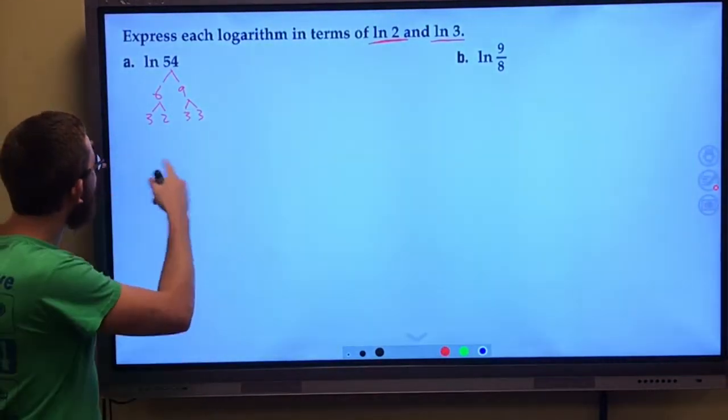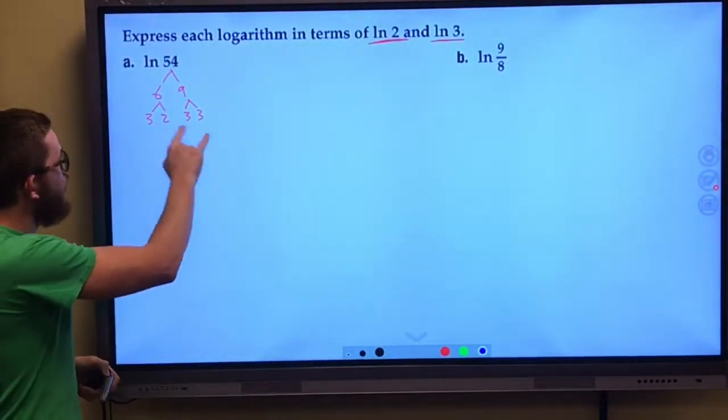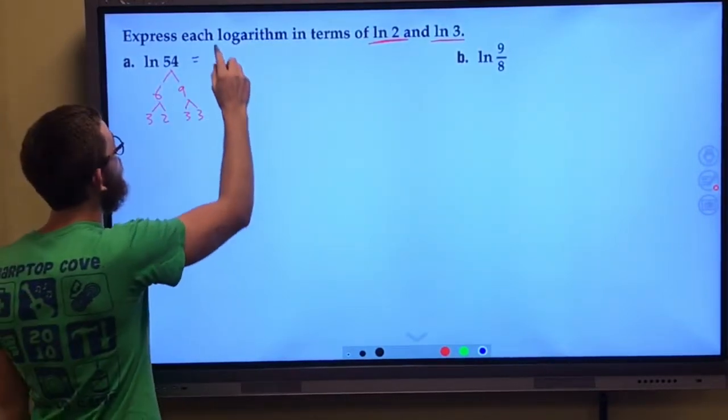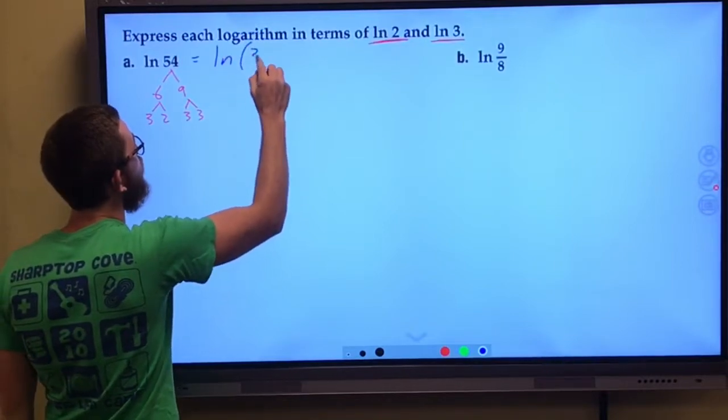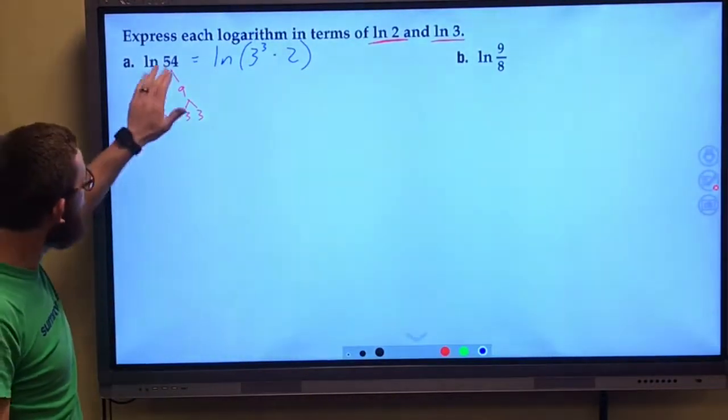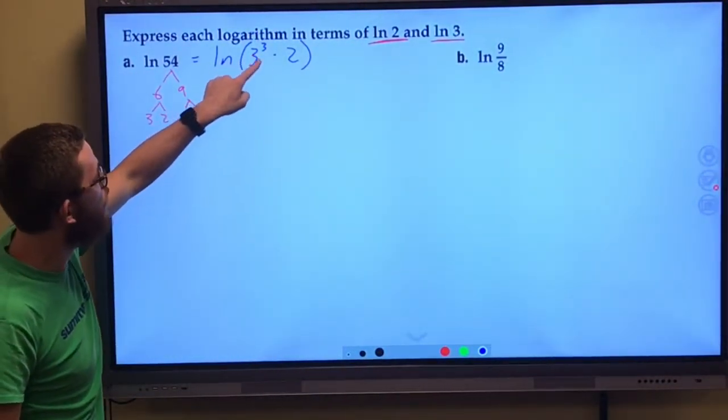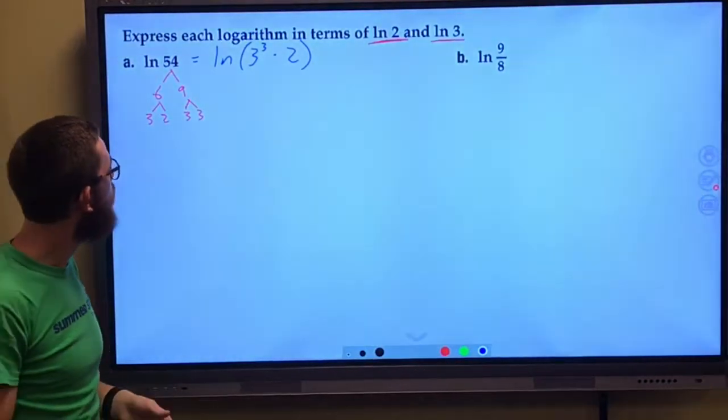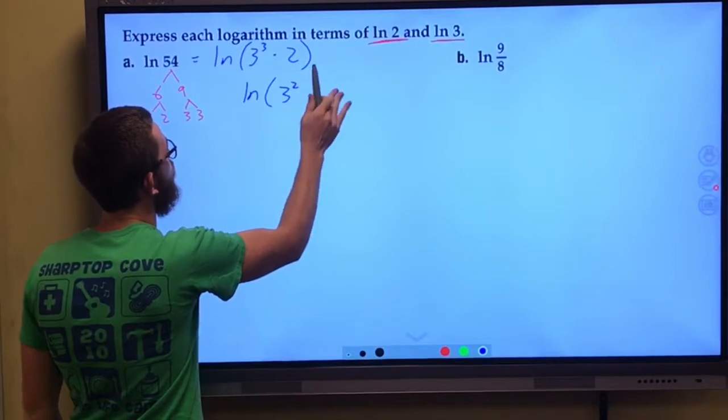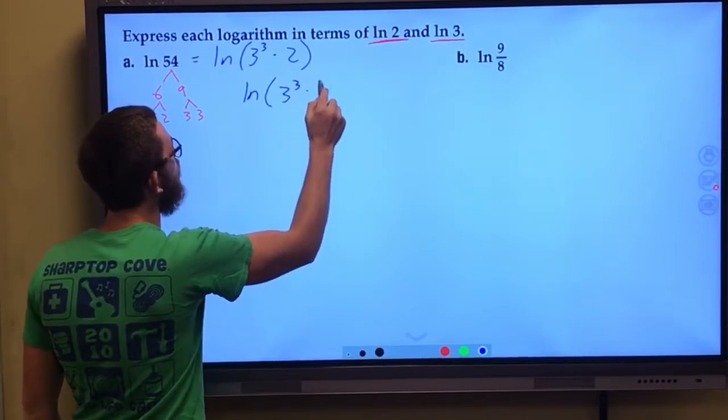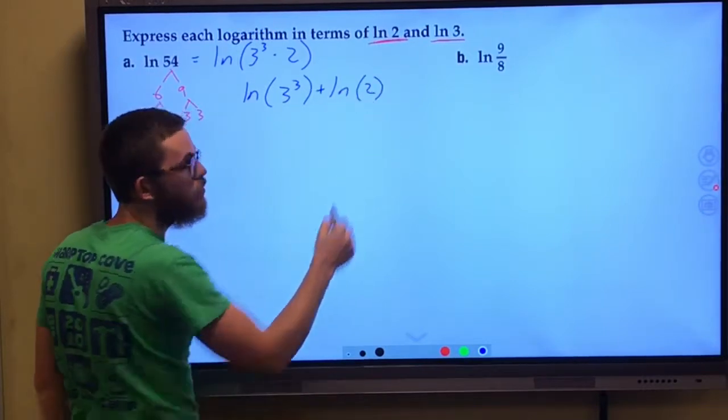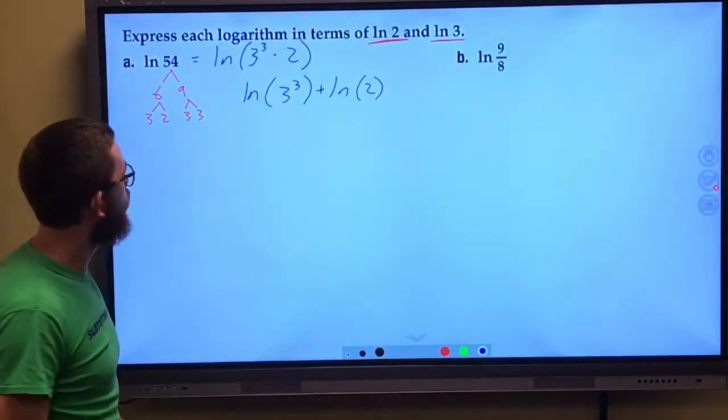And so right here, I see that 54 is made up of 3 threes and 1 two. So I'm going to rewrite natural log of 54 to be natural log of 3 cubed times 2, because I know that 54 is 3 cubed, which is 27, times 2 gives me 54. I'm going to break this up first using my product rule. This is natural log of 3 cubed plus natural log of 2. That's that first property we learned about.